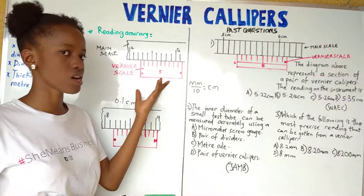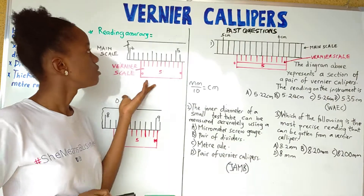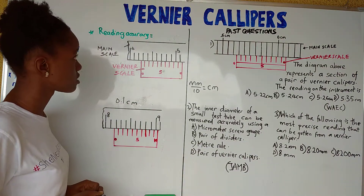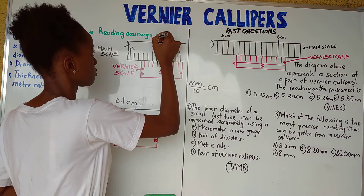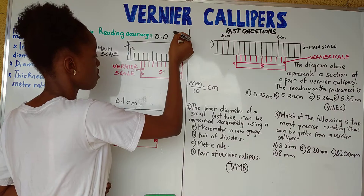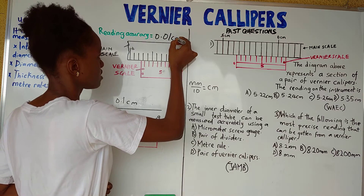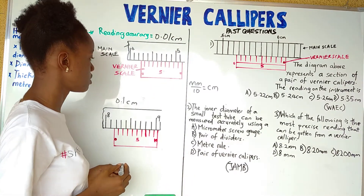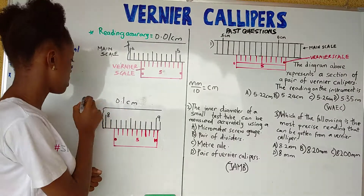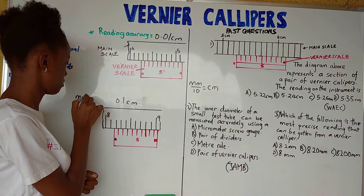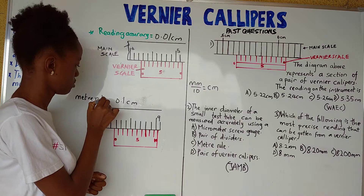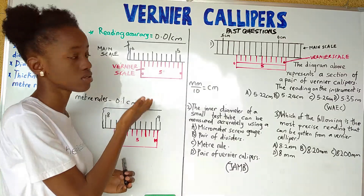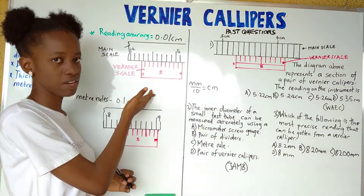Now, the reading accuracy for vernier calipers is 0.01 centimeters. This is the reading accuracy for vernier calipers, while 0.1 centimeters is the reading accuracy for meter rules. I will use this reading accuracy to solve questions involving vernier calipers.